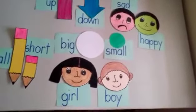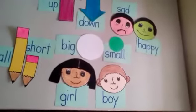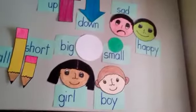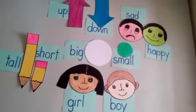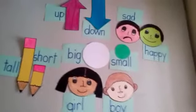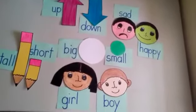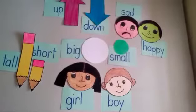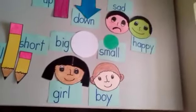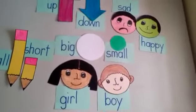Big and small, up and down. When I say opposite, you say different. Opposite, different. Opposite, different. Boy and girl, happy and sad. When I say opposite, you say different. Opposite, different. Opposite, different. Happy and sad, tall and short. Opposite different, opposite different, opposite different. Big and small, up and down. When I say opposite, you say different. Up and down, boy and girl. Happy and sad, tall and short. Big and small, when I say opposite, you say different.